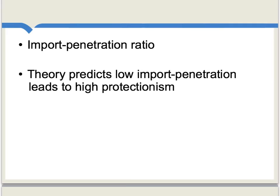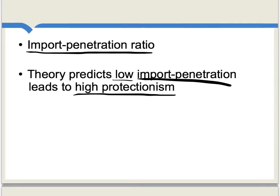The third predictor is the import penetration ratio. Protection for Sale theory predicts that a low import penetration ratio tends to lead to high protectionism — the intuition being that the tariff penalizes consumers less when import penetration is relatively low. That said, this runs counter to the intuition that we might expect higher pressure for tariffs where competition from foreign products is increasing. Empirically, the Protection for Sale model has not held up in every regard.